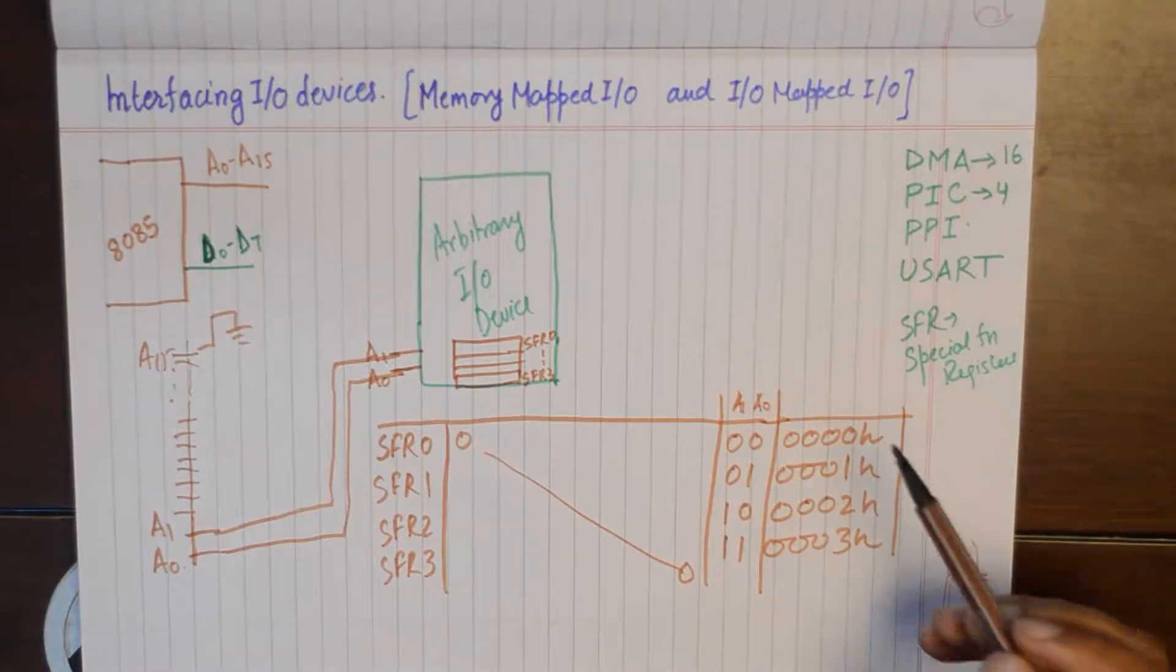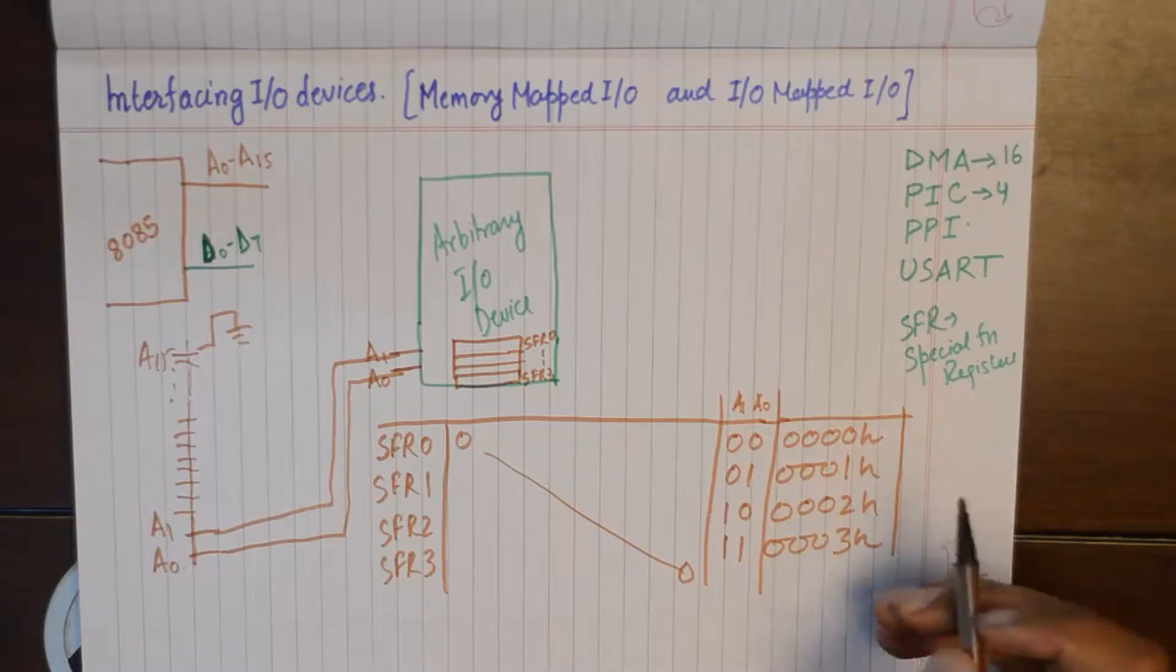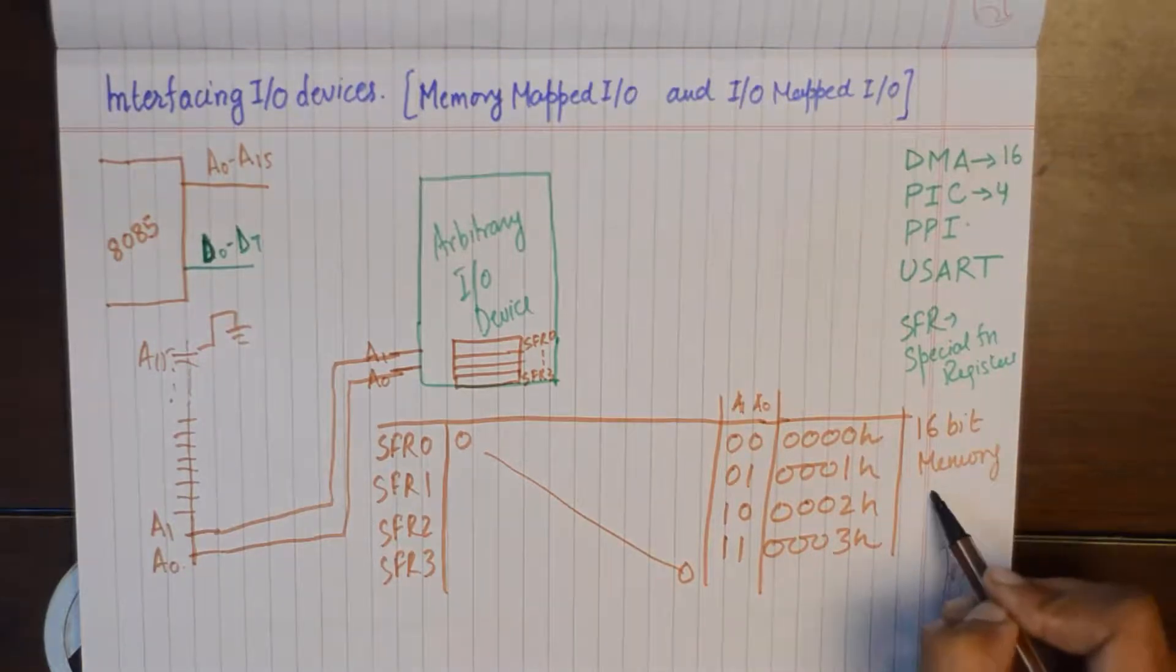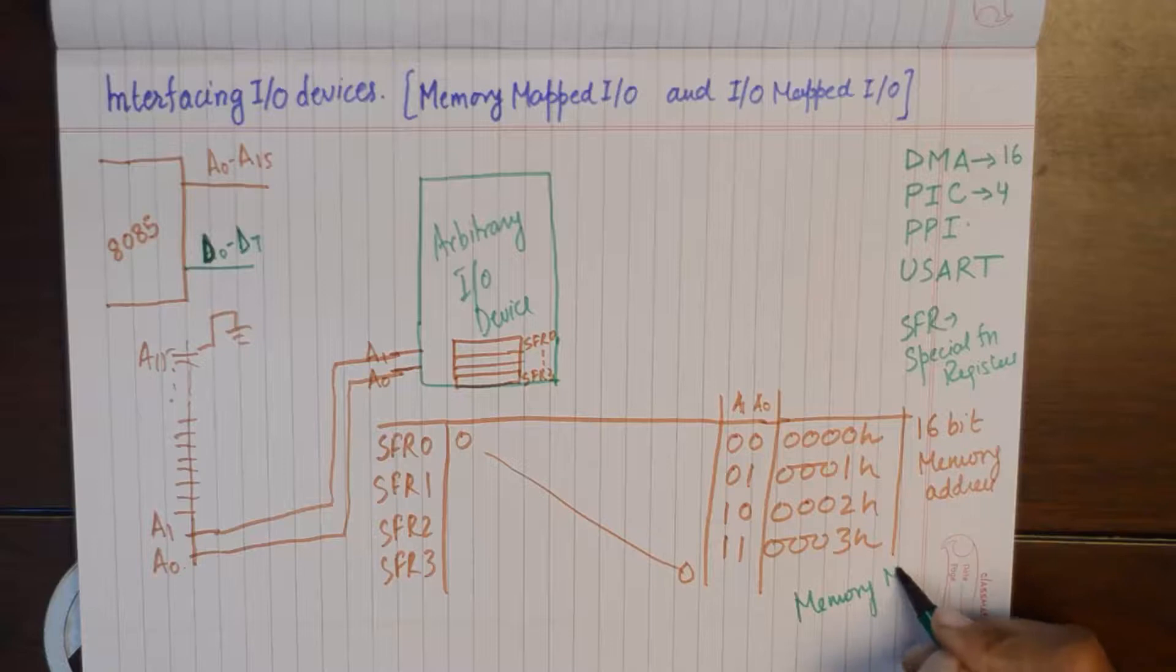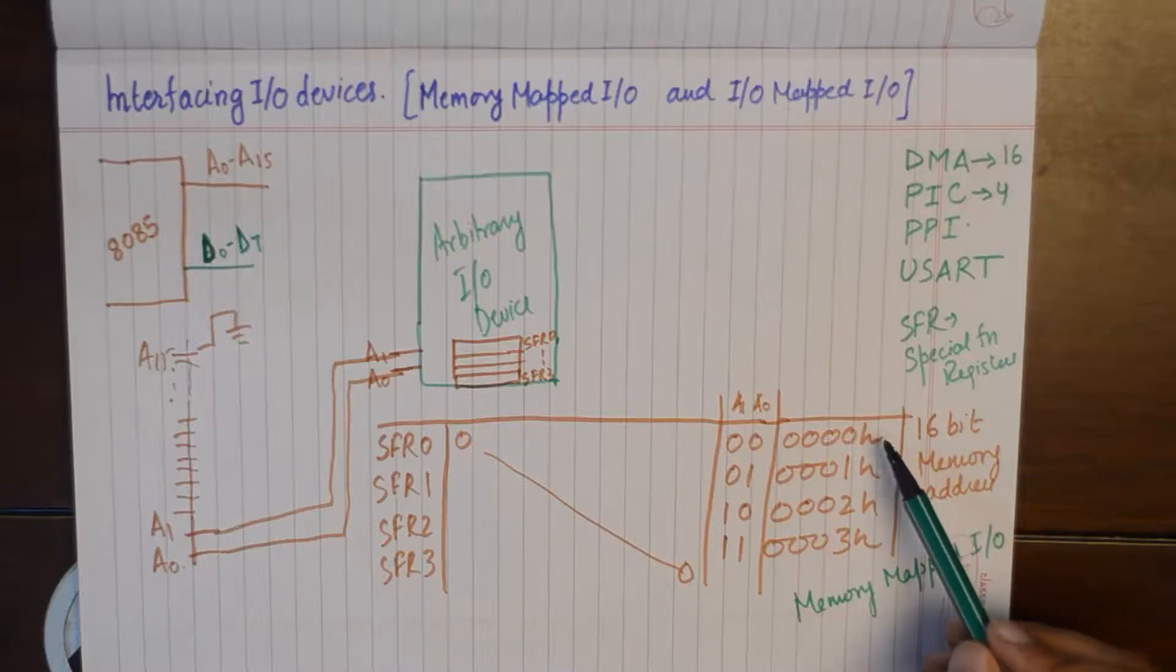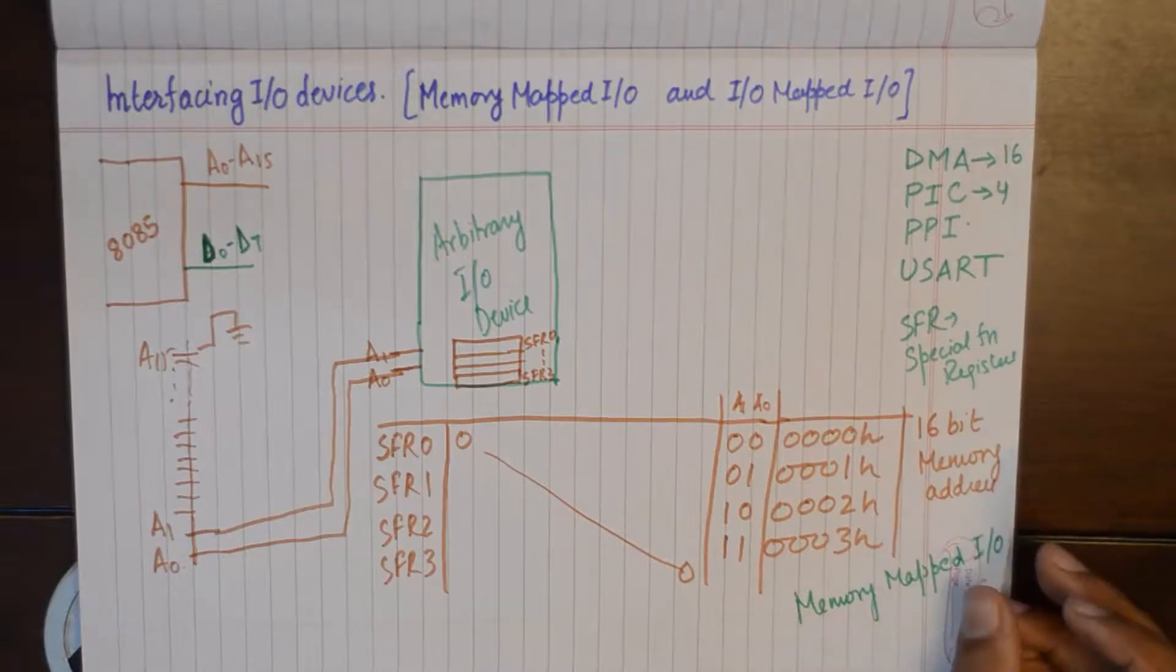Now this method of generating an address for the registers inside I/O device, where each address is a 16-bit memory address, is known as memory mapping. All these SFRs they will be referred to or named as a 16-bit memory address.